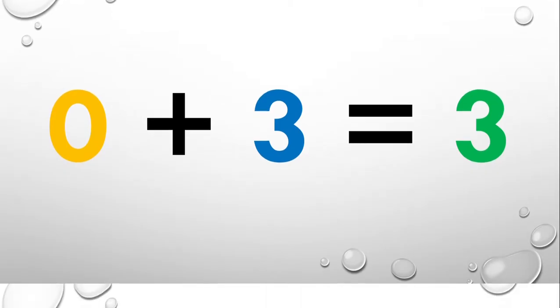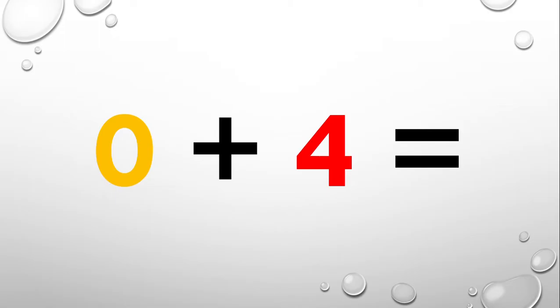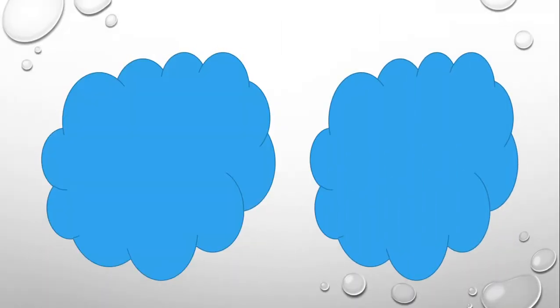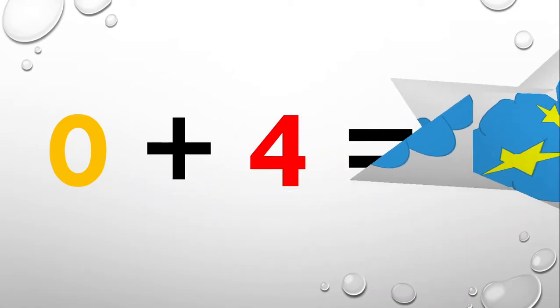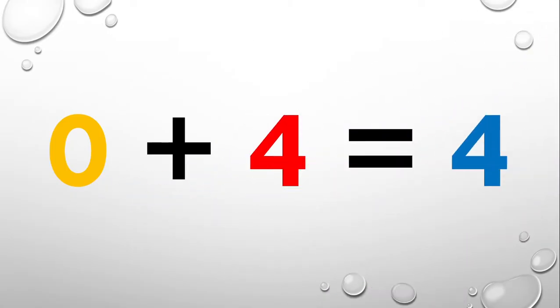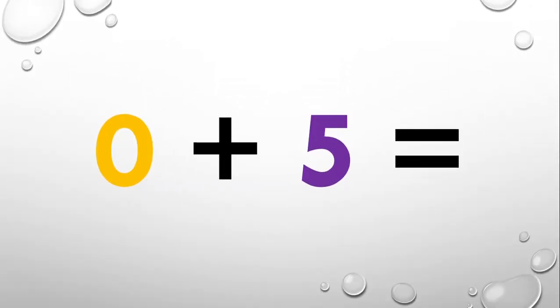Now what about zero plus four? Let's figure out what zero plus four equals. There are zero stars on the first cloud and there are four stars on the second cloud — one, two, three, four. Let's count all of the stars together: that's a total of four. That means that zero plus four equals four.